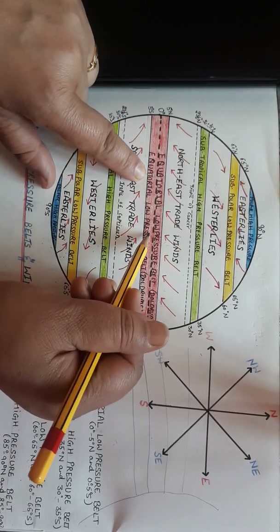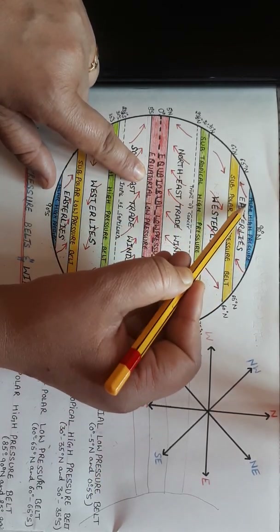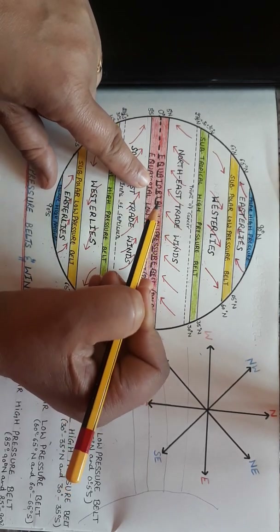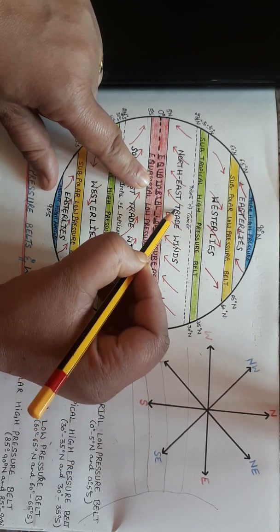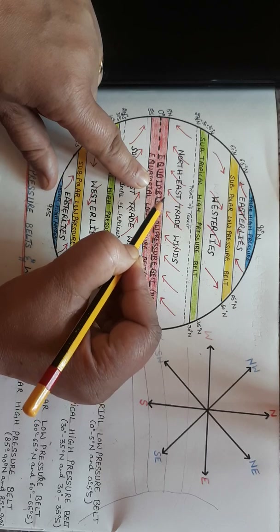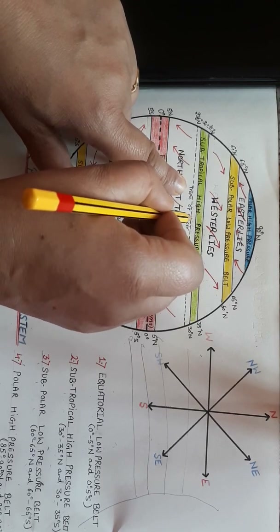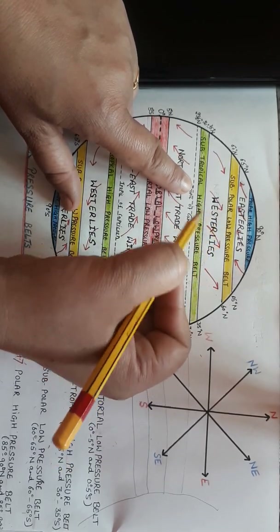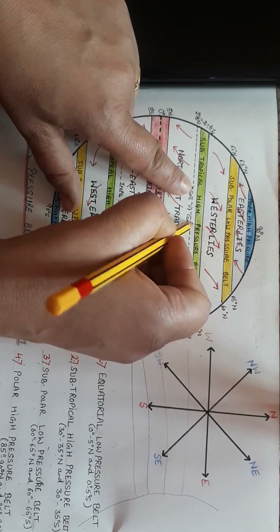Let me explain. In the equatorial low pressure region, warm air rises and moves from the equator towards the polar region. As this air rises and moves poleward, it reaches the troposphere. In the troposphere, the temperature of the air starts decreasing — the air starts becoming cold. Cold air is heavy, so it will sink down.